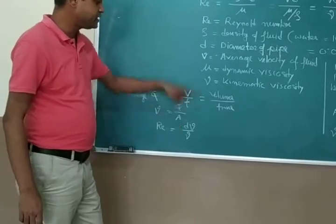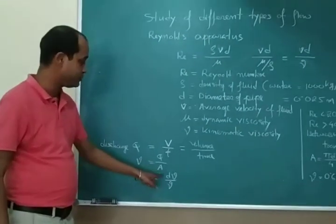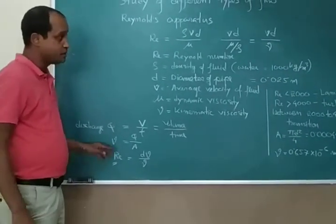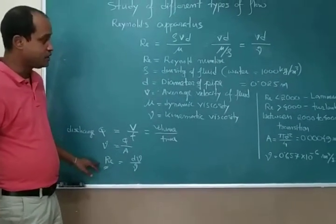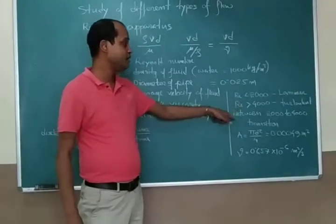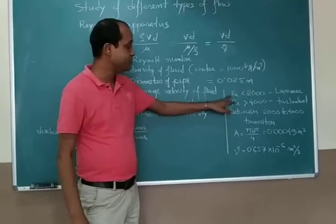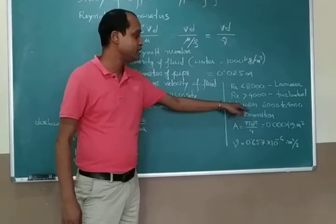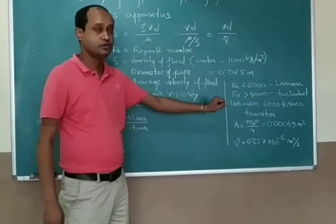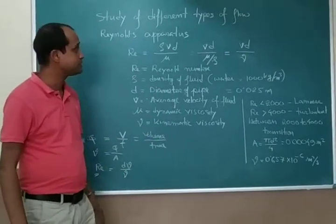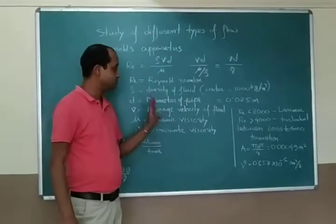Discharge divided by area gives you the average velocity. And for Reynolds number, d is given, v we are finding from here, and mu is already given. From there you can find out the Reynolds number. After finding the Reynolds number, we can easily observe whether it comes under laminar, turbulent, or transition. Let's do the experiment.